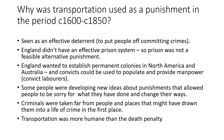Secondly, England didn't have an effective prison system, so prison wasn't a feasible alternative — there simply weren't enough prisons, and building them is obviously expensive. Thirdly, England wanted to establish permanent colonies in North America and later in Australia. They needed labour, and convicts could be used to populate and provide manpower — tilling the land, building communities and houses.